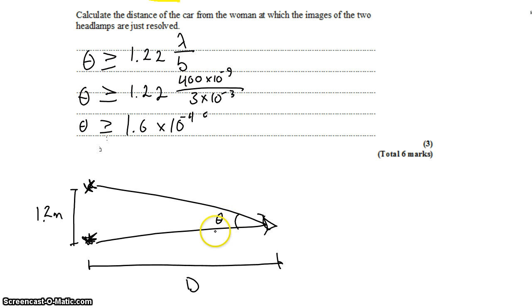Well, theta is very small, which means that this distance is going to be much greater than the separation between the bulbs. And that's going to allow us to approximate this isosceles triangle as a right triangle, which allows us to say that the tangent of theta is equal to 1.2 divided by d. In addition, because theta is so small, we can use the small angle approximation and say that theta is equal to 1.2 over d, or d is equal to 1.2 over theta, which we calculated just a second ago: 1.6 times 10 to the negative 4.